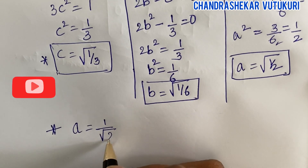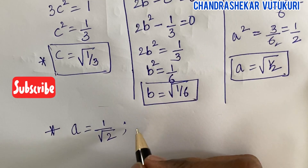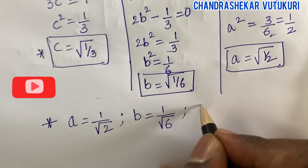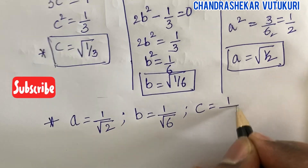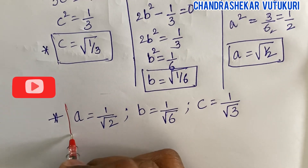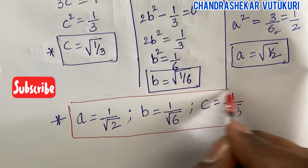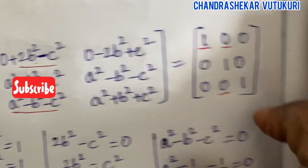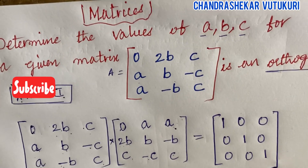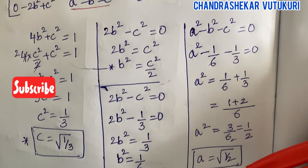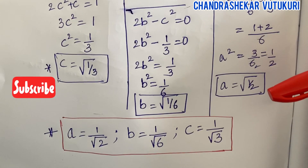So the final answers are: a = 1/√2, b = 1/√6, and c = 1/√3. Please highlight these in the exam to score full marks. If a question asks you to work out values for a given orthogonal matrix, you are supposed to work it out step by step like this. Hope you are liking my videos — for more videos please subscribe to my channel. Good luck!